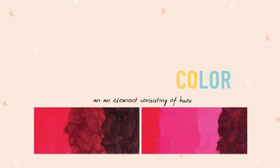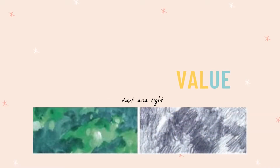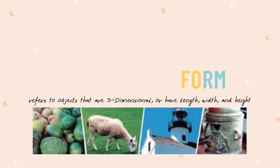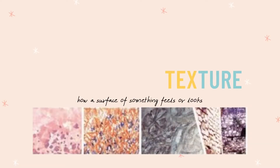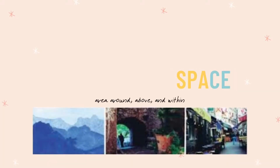Color is an element consisting of hues. It can be bright, dull, dark, and light. Form refers to objects that are three-dimensional or have length, width, and height. Texture is the perceived surface quality of a work of art. It is an element of two-dimensional and three-dimensional designs and is distinguished by its perceived visual and physical properties. Space refers to the area within, around, above, or below an object or objects.